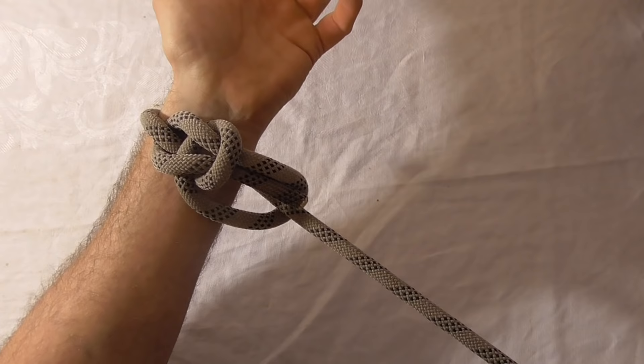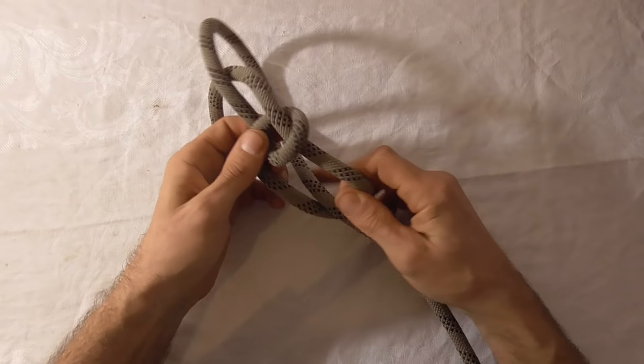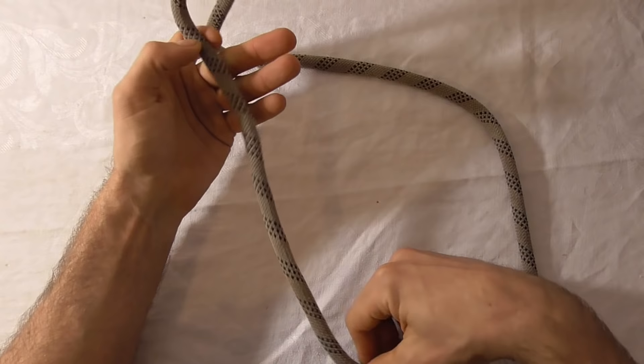To tie this knot is pretty easy. If you already know how to tie a bowline, you can tie this one too. What you need to do is start by forming an overhand loop.